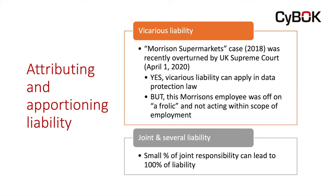Secondly, I've mentioned joint and several liability. A small percentage of joint responsibility can lead to 100% of liability. How does that happen? Imagine if there's more than one joint tortfeasor — your company and a second company are both involved in doing something that harms an individual. Well, you can say 'I'm only partly responsible, so we have to share responsibility.' What if the other party goes bankrupt, or can't be found and drawn into court? Joint and several liability is the doctrine that says: even if you only caused part of the problem, you might end up having to pay all of the liability.